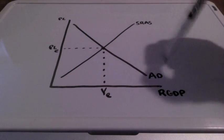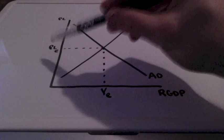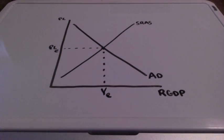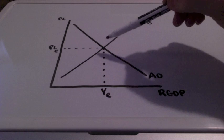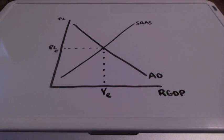We have our downward sloping aggregate demand curve, our upward sloping short run aggregate supply curve, PLE representing price level at equilibrium, and YE representing GDP at the equilibrium point.